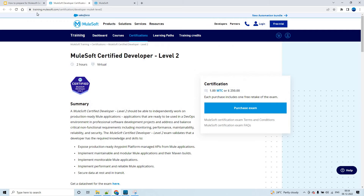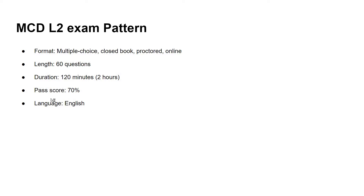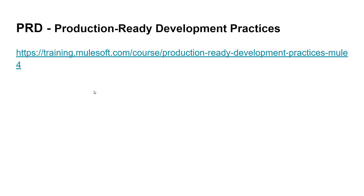This is the exam pattern: every question is a multiple choice question. It is proctored and online, so you'll be monitored while giving the exam. It is a closed book exam — you cannot access anything else. The total number of questions is 60, the duration is 120 minutes (two hours), and the pass score is 70%, meaning you need at least 42 out of 60. The language is English.